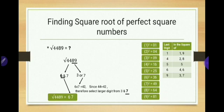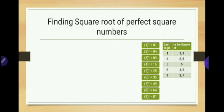So 6 is the tens place and 7 is the unit place. Therefore the square root of 4489 is 67. Try more examples at home so that you become familiar with the method.